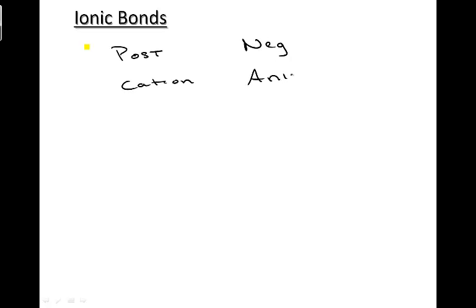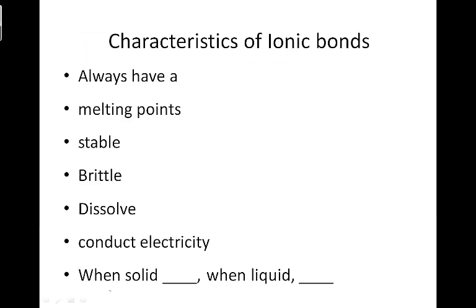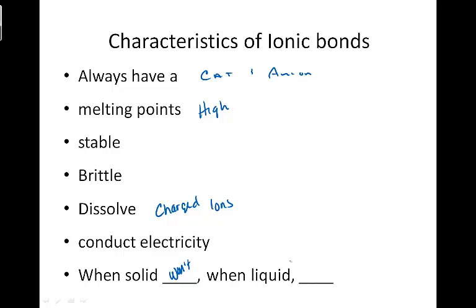The formation of ionic bonds is always exothermic, meaning energy is always released. Ionic bonds always involve a cation and an anion. They are very stable, so they have high melting points. They dissolve in water or polar solutions easily because of their charged ions. Because of the positive and negative ions, they conduct electricity when dissolved in water. When solid they won't conduct electricity, but when dissolved they will.